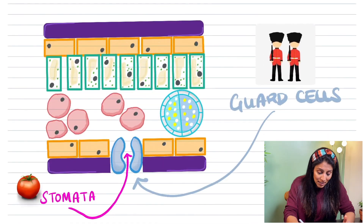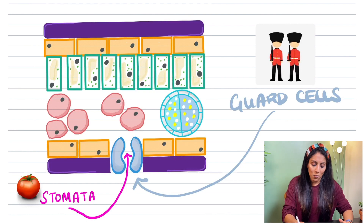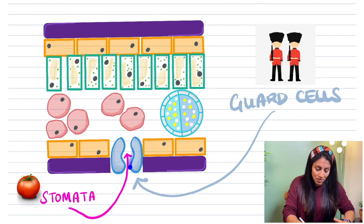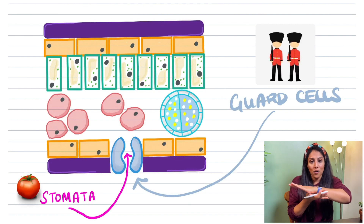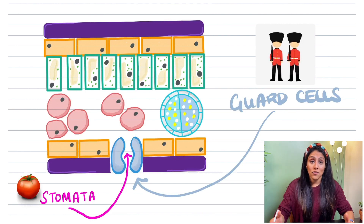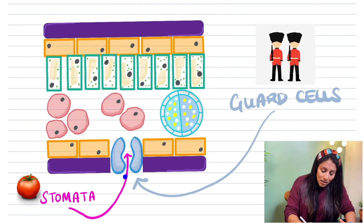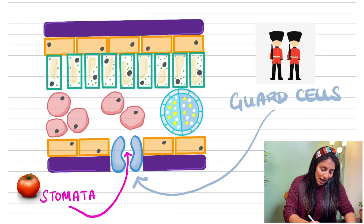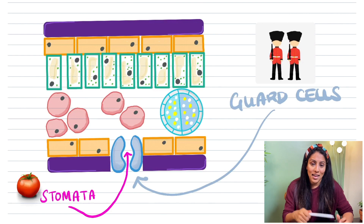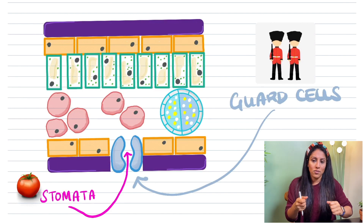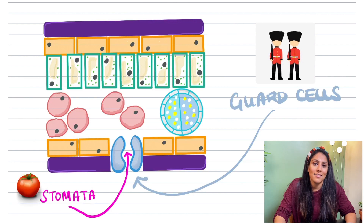Right at the bottom of the leaf you have guard cells. Just like guards in front of Buckingham Palace who allow entry to some people and not others, these guard cells open and close to allow gases to enter the plant, and this is controlled by osmosis. The space between the guard cells is called the stomata — the pores found underneath the leaf. It sounds very similar to 'tomato', which is why there's a picture of a tomato to help you remember. So guard cells are the two cells that open and close, and the gap between them is your stomata.